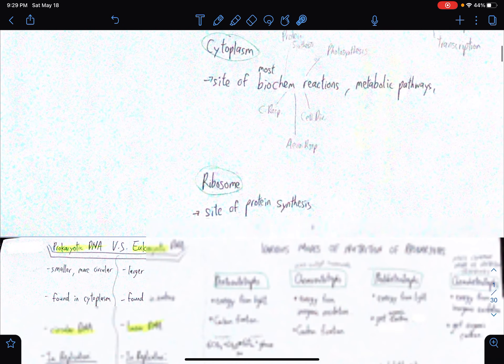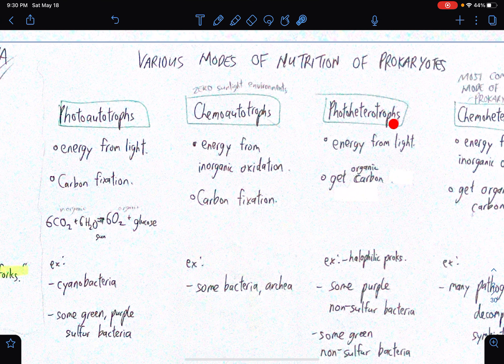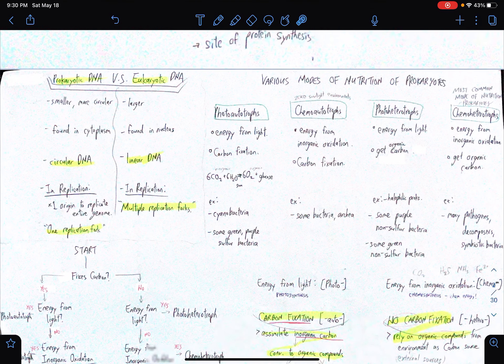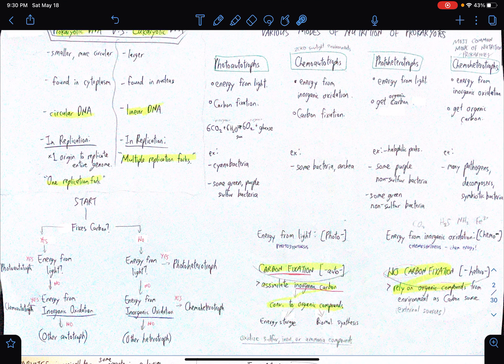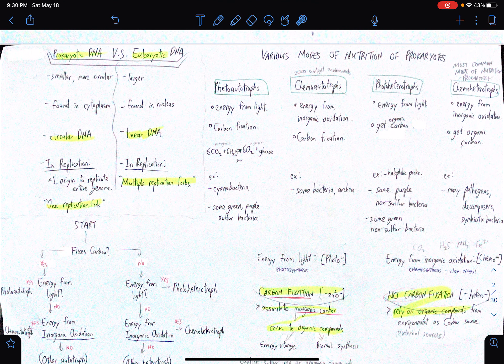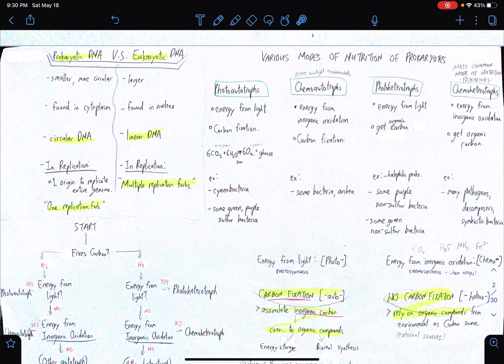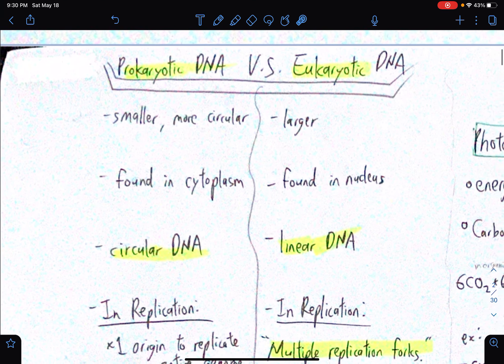So I suppose this part talks about the various modes of nutrition of prokaryotes. So there are four categories. We have photoautotrophs, chemoautotrophs, photoheterotrophs, and chemoheterotrophs. So how do we know, how do we distinguish each one from each other? Before that, let's go here first.